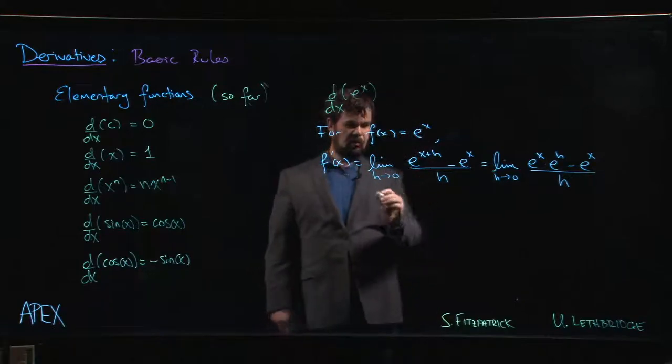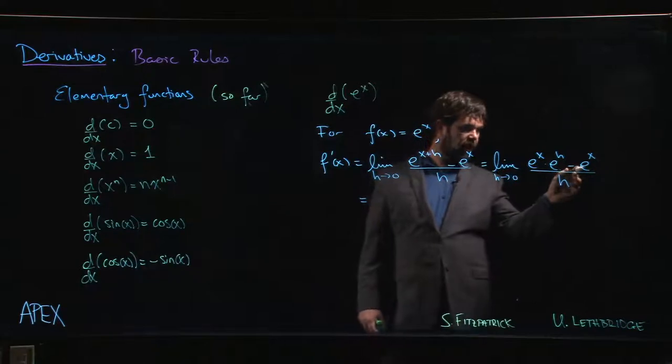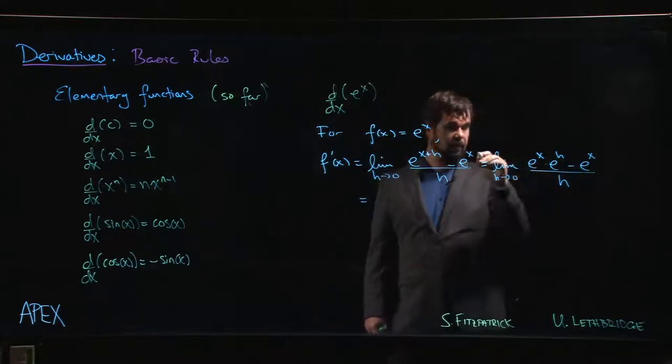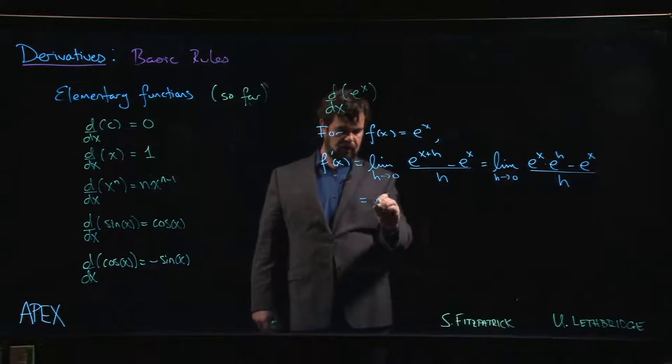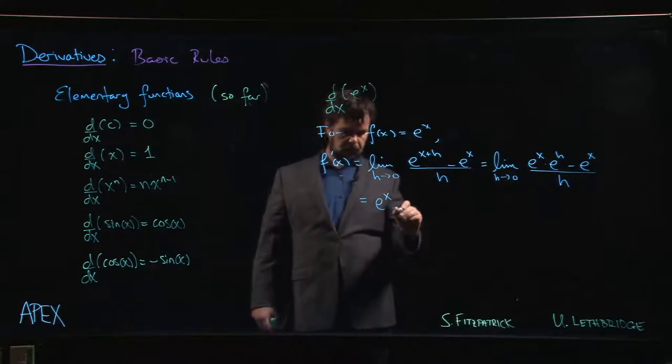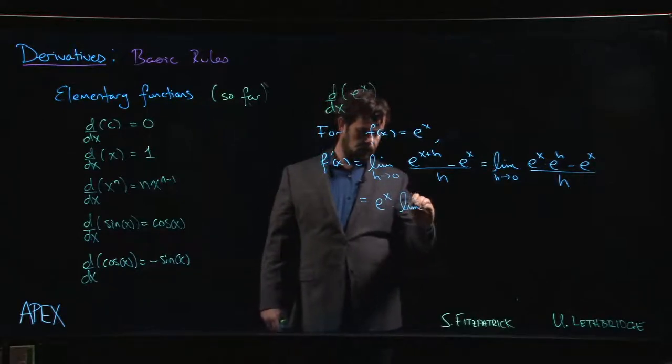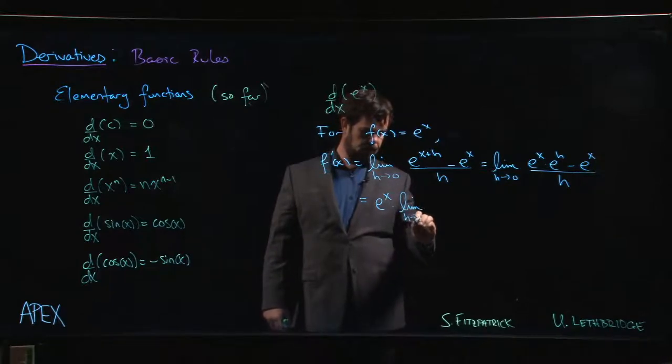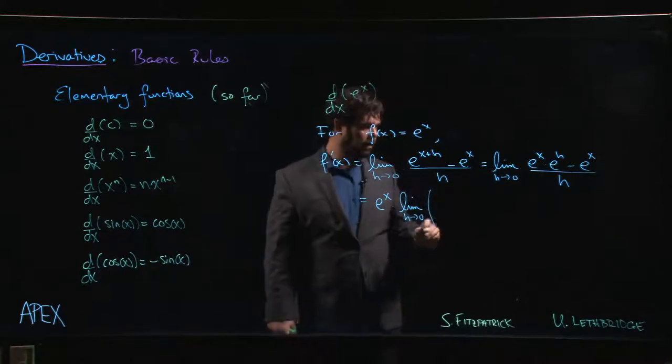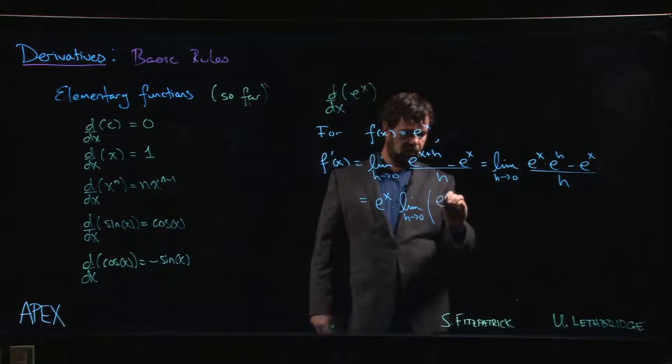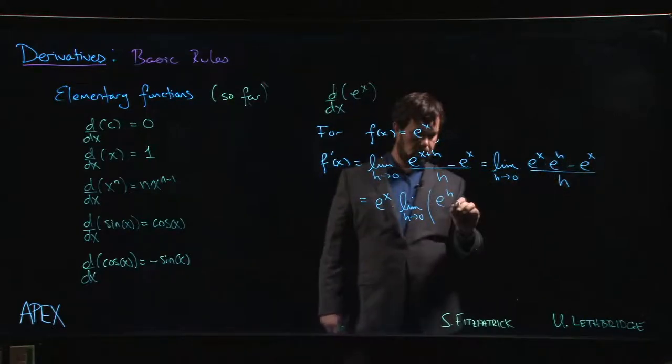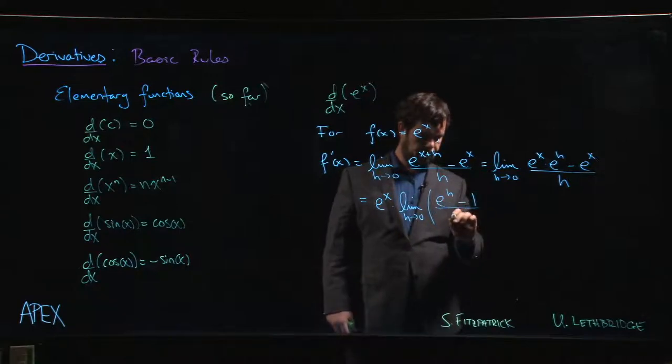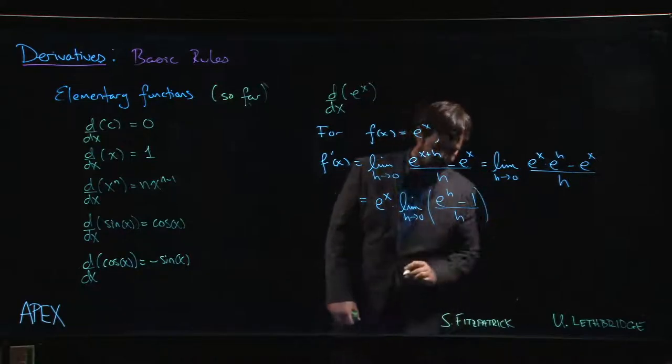Ah, now there's this e to the x, which is common. And so e to the x is a common factor. I can factor it out. And in fact, I can factor it right out of the limit because it doesn't depend on h. So I have e to the x times the limit, h going to 0 of, so here it was e to the x times e to the h, and then e to the x times 1 over h.